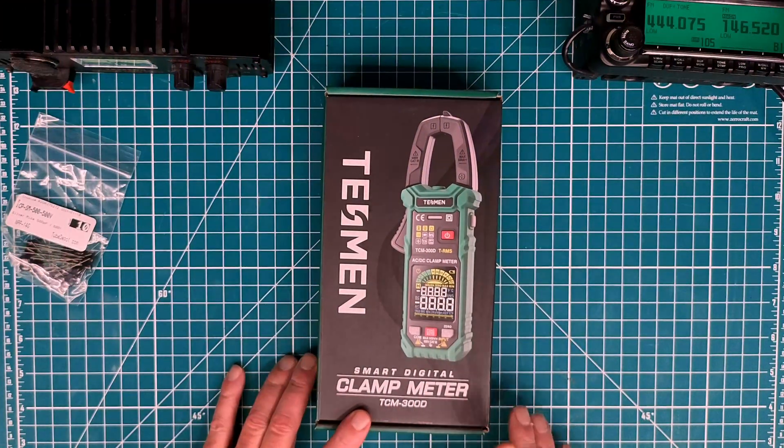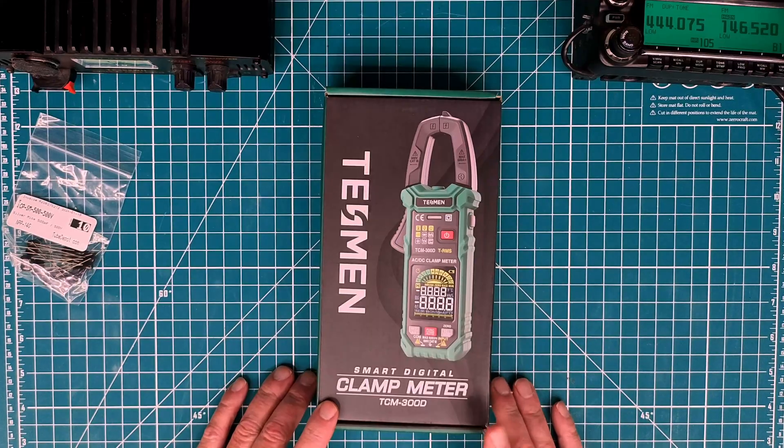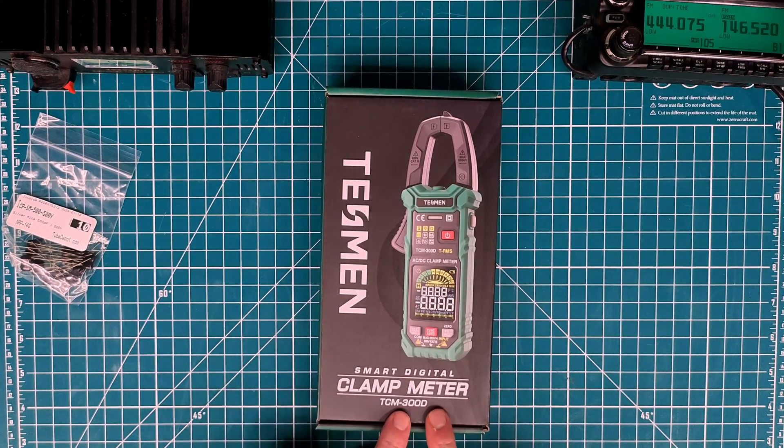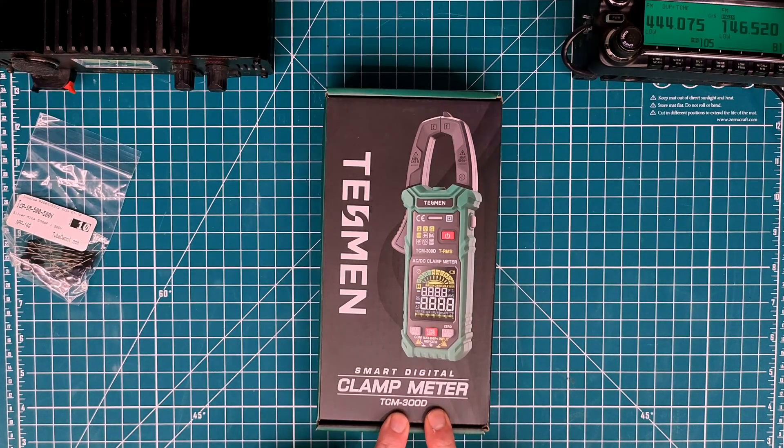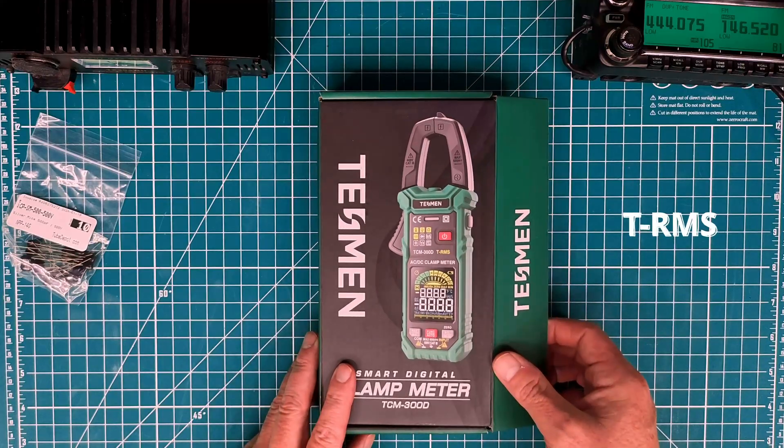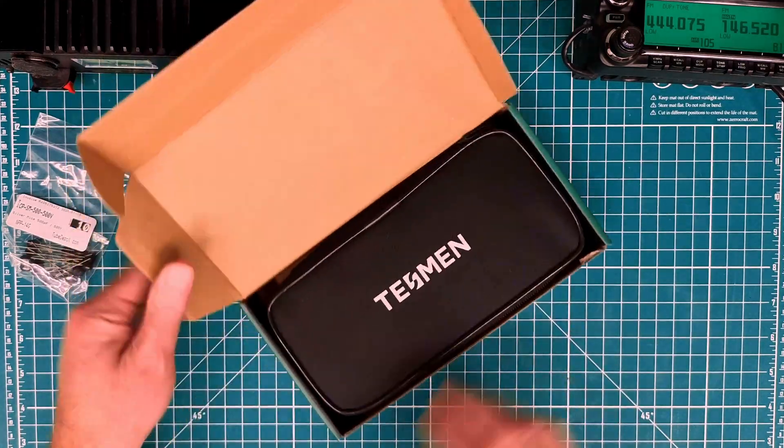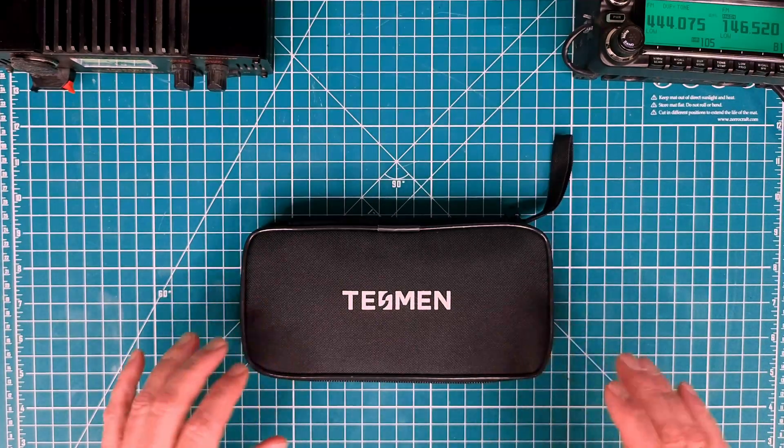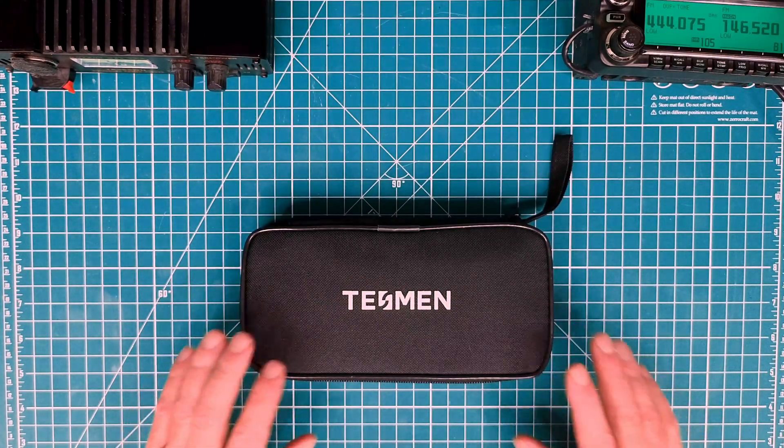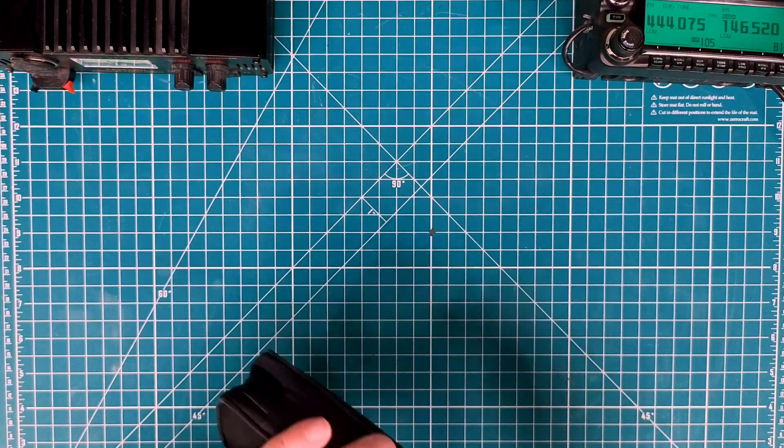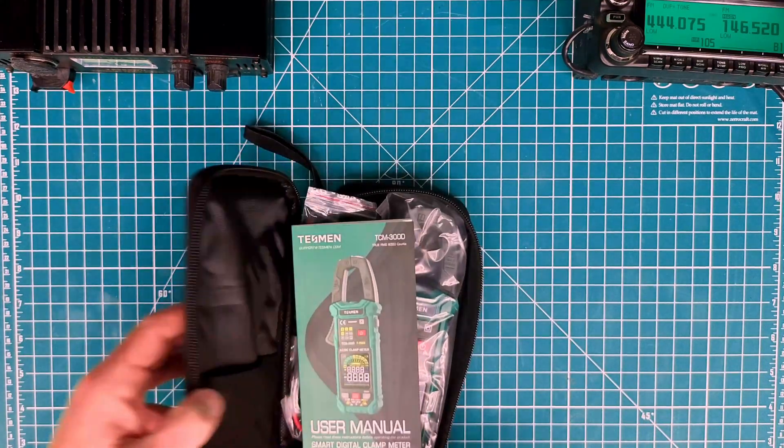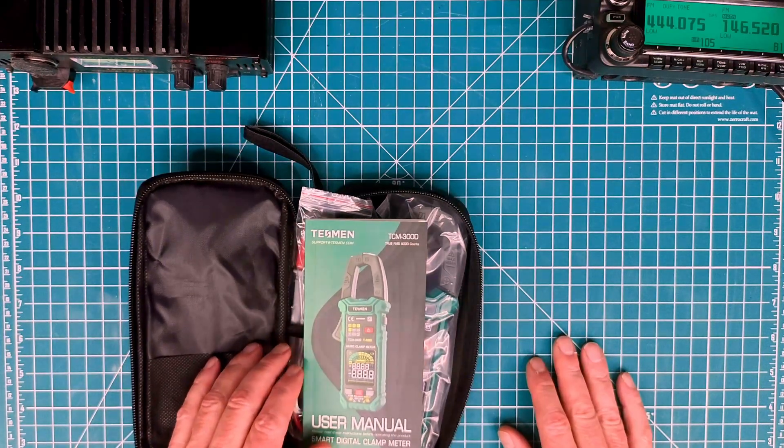Okay. So we are here with the Tessman digital smart clamp meter, the TCM 300D. I do want to point out this is the D model and the D model will do both AC and DC. So this is a true RMS meter. And once you get in the box, you'll see a nice presentation here, a carrying case, which you may or may not keep in your toolbox. But inside that we have a couple of things. And first of all, we're presented with the manual.